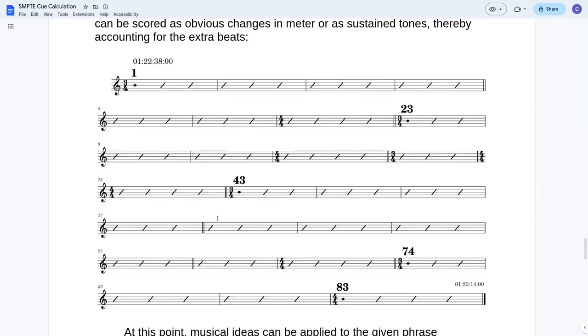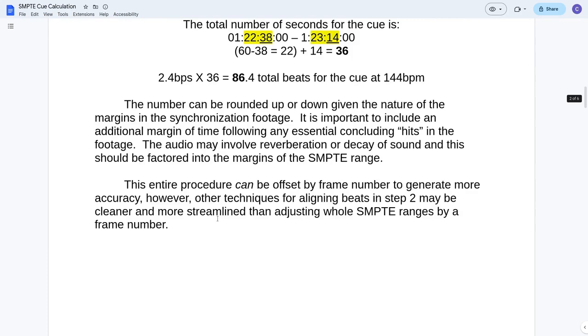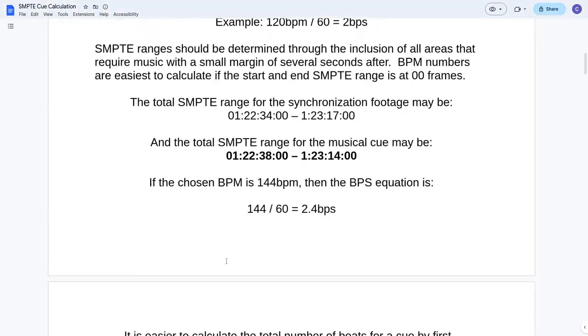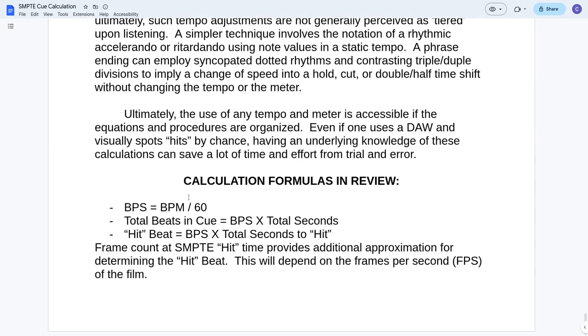The frame count at the SMPTE hit time provides additional approximation. It tells you how many more frames to approximate to determine whether you're on the beat that you mathematically determined, or if you want to go to the next beat, or if you want to give a subdivision for that hit of the beat. It all depends on the frames per second of the film. You got to know your FPS if you're going to use the time code. Another thing you can do before you write music, take your canvas, put a sound on each one of the hits, render that out, check it against the time code alignment, just to be sure that everything is the way it's supposed to be. And then start writing your music.